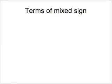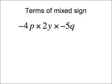Moving on, we have negative and positive terms. So you need to remember your directed numbers: a minus times a plus is a minus, and a minus times a minus is a plus. Suppose we had something like: minus 4p times plus 2y — notice how the plus isn't written explicitly — times minus 5q.